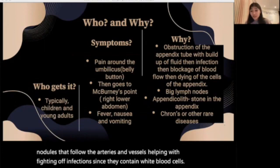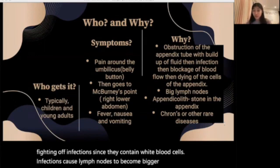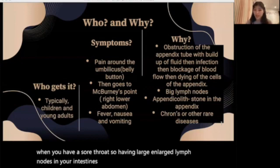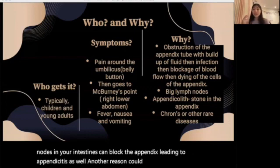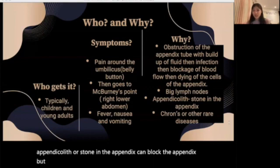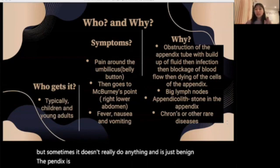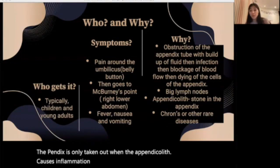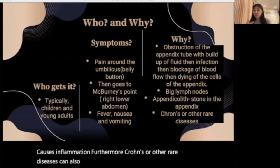Infections cause lymph nodes to become bigger — for example, when you have a sore throat. So having enlarged lymph nodes in your intestines can block the appendix, leading to appendicitis. Another reason could be an appendicolith, or stone in the appendix, that can block it, though sometimes it doesn't cause problems and is benign. The appendix is only removed when the appendicolith causes inflammation. Furthermore, Crohn's or other rare diseases can also cause appendicitis. Crohn's is a genetic disorder that causes inflammation of the digestive system.